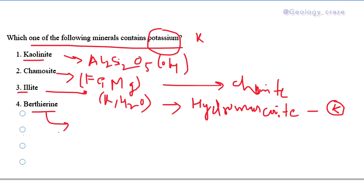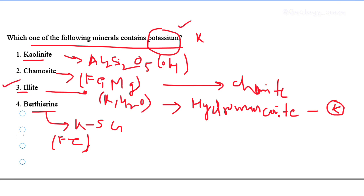The fourth option is a kaolinite-serpentine group mineral that contains iron and is enriched in iron. The question asks which mineral contains potassium, so the answer is illite.